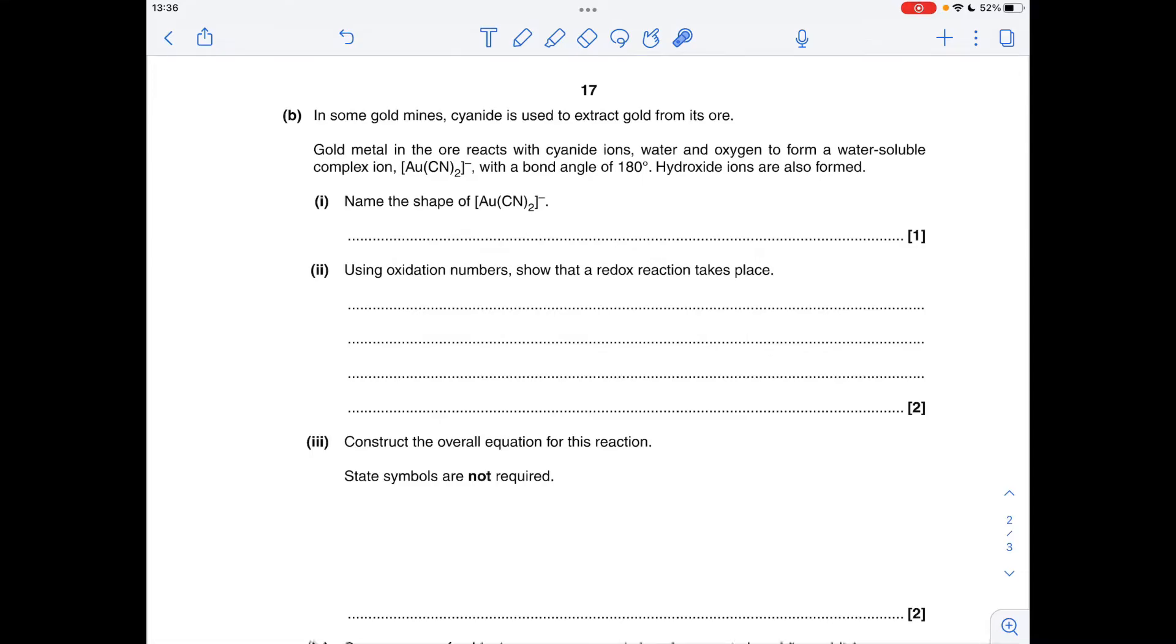Moving on to part B: we've got to apply our shapes knowledge to this one. Obviously this is going to be linear with that bond angle of 180 degrees. Next part, we've got to justify that this is a redox reaction. All I've done here is turn the information in that couple of sentences into this unbalanced equation. We'll deal with the full equation in this part, but this is enough to get us the answer to this part of the question.